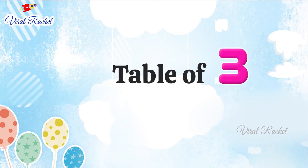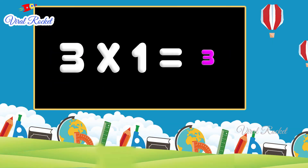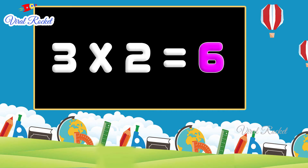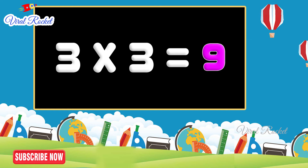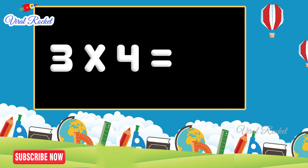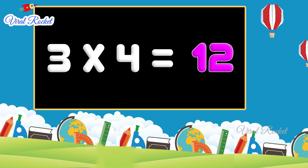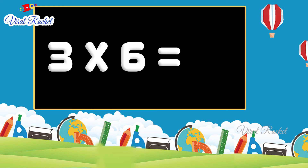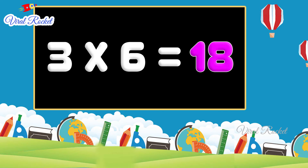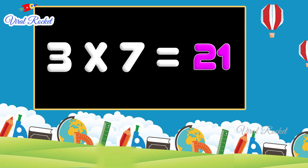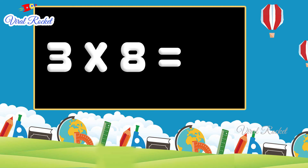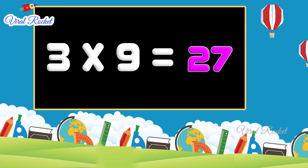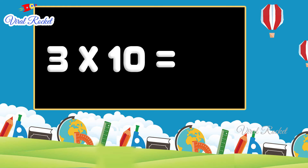Table of three. Three one's are three, three two's are six, three three's are nine, three four's are twelve, three five's are fifteen, three six's are eighteen, three seven's are twenty-one, three eight's are twenty-four, three nine's are twenty-seven, three ten's are thirty.